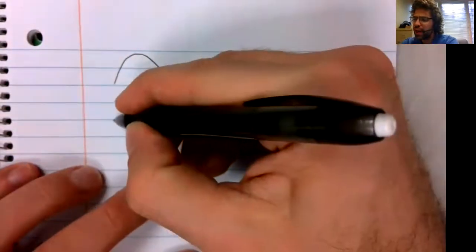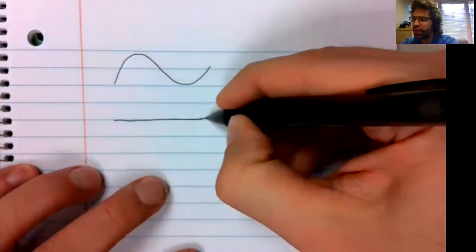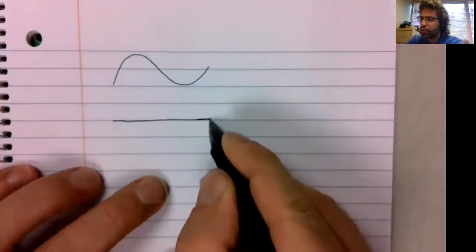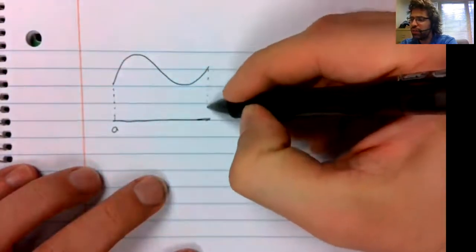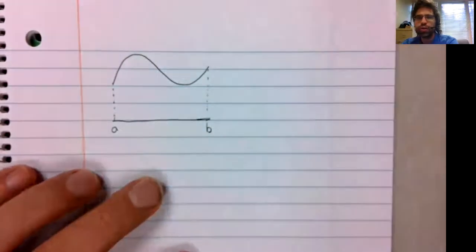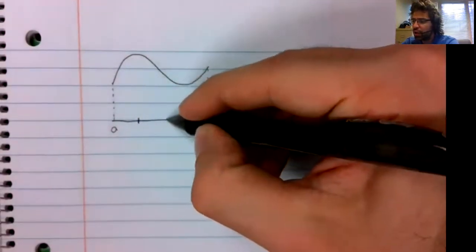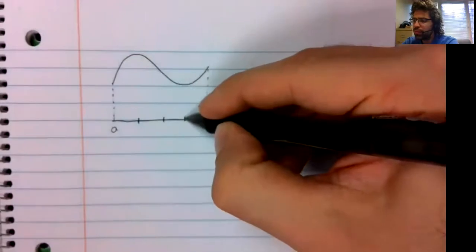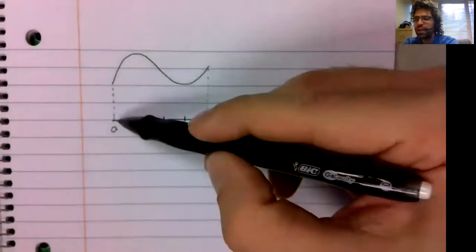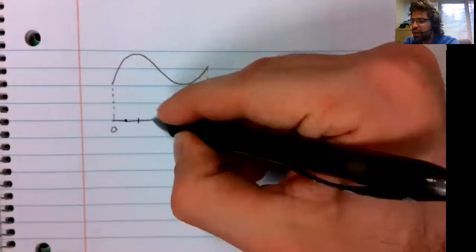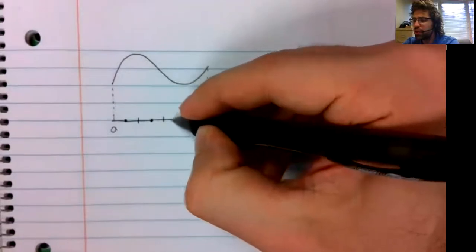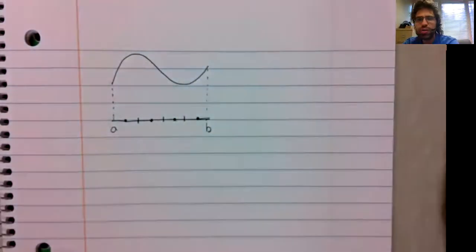Suppose we have a positive function, and you're trying to approximate the area under the curve from A to B. Our Riemann sum is defined by splitting this interval into subintervals, however many you have. In each subinterval, we select a point.